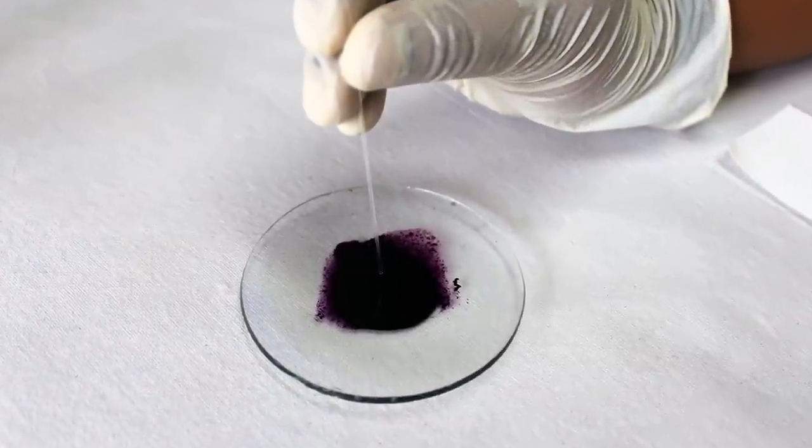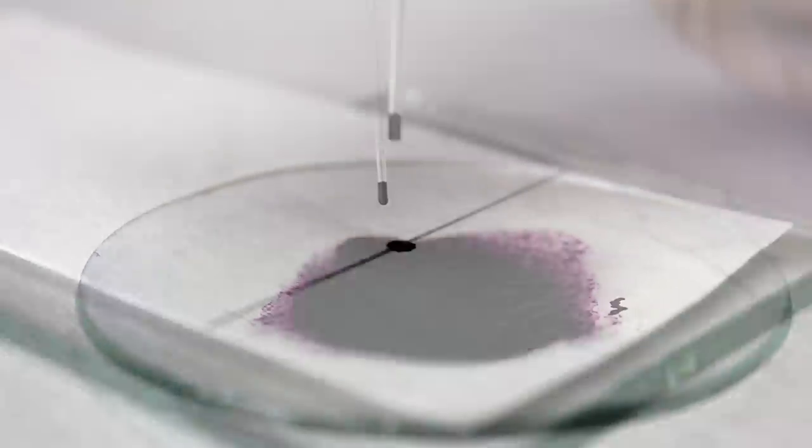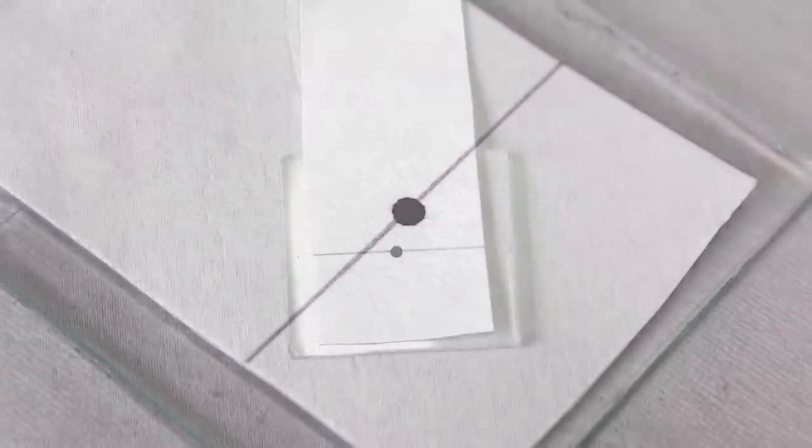Again, take the mixture of red and blue inks using the capillary tube. Put another drop on the same spot and dry it again so that the spot is rich in mixture.